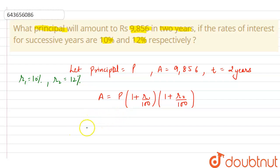So if we put them in the formula then we will get 9,856 equals to P, 1 plus, at place of R we can write 10, so it is 10 by 100 into 1 plus 12 by 100.